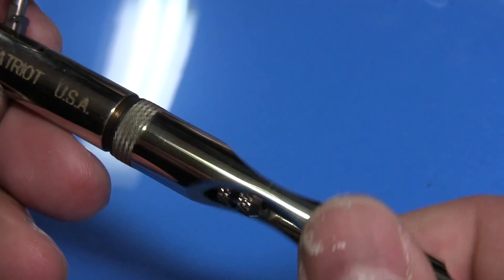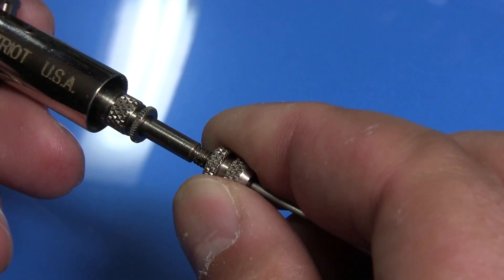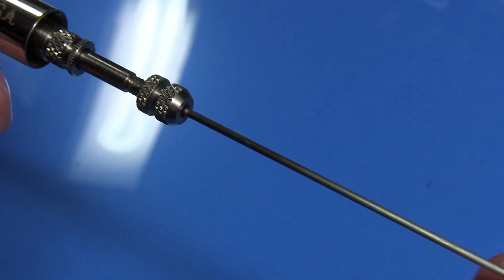For disassembly, first remove the handle. Then loosen the needle chuck. Remove the needle carefully.